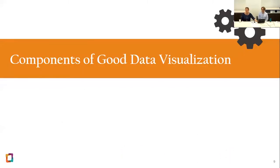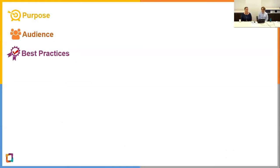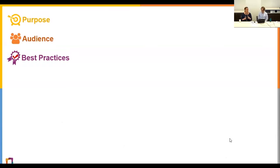What are the components of good data visualization? We have primarily three: the purpose of the graphic and the story we want to tell; the audience; and best practices that can help us create more effective graphics. You always want to keep these components in mind regardless of what your data or story is.